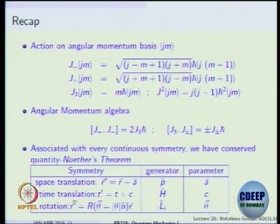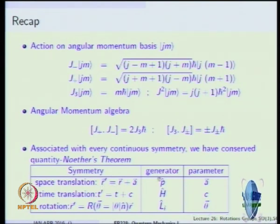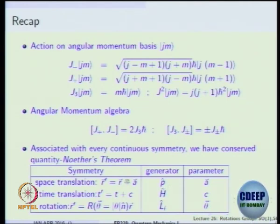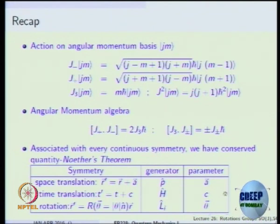What is the symmetry? Translation takes a vector r by a units. The operator which performs this translation is the linear momentum operator, and the corresponding parameter is a vector. The linear momentum components px, py, pz are called generators — there are three generators for translation. Correspondingly, there will be three parameters: ax, ay, and az. Whenever you find the number of generators, you will have an equal number of parameters.